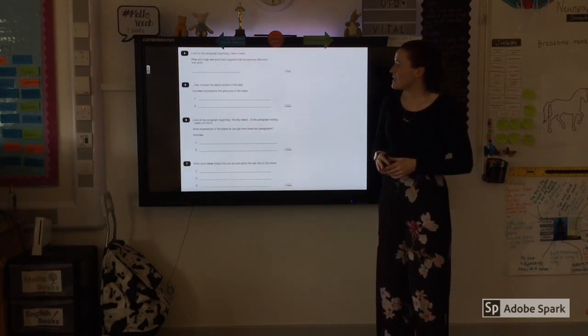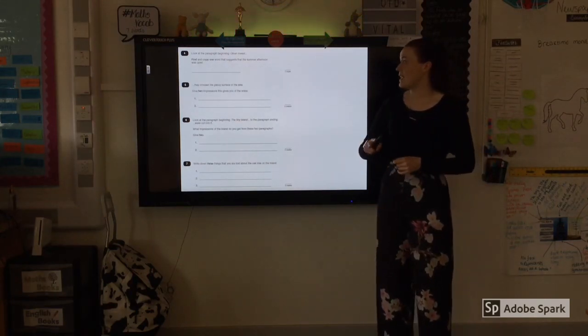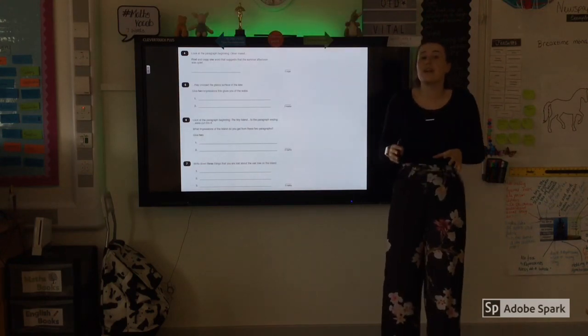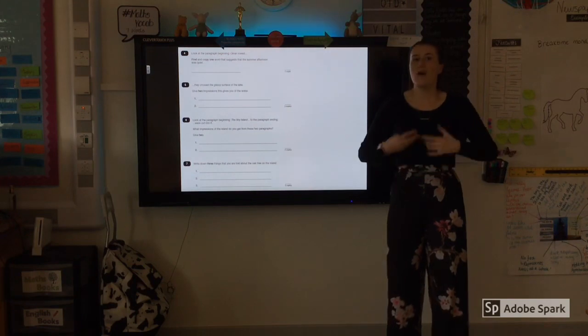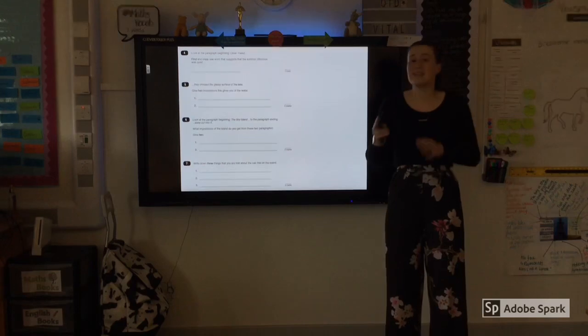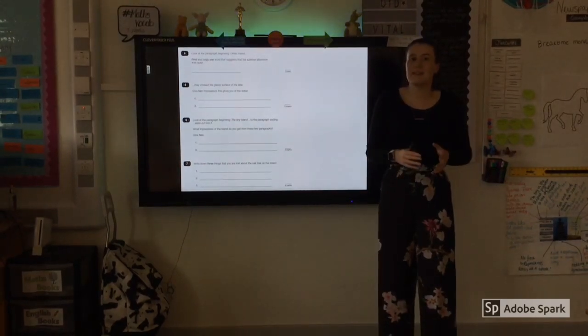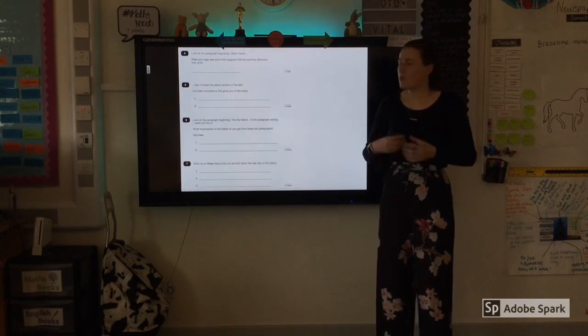Number five. They cross the glassy surface of the lake. Give two impressions that it gives you of the water. Now we have been working a lot on that word impressions. Impressions is just another word for feelings about that thing. What does it make you think of? So you are looking for two things and literally again, back into the text. Find the words, pop them straight into your answer. Don't write in your own.